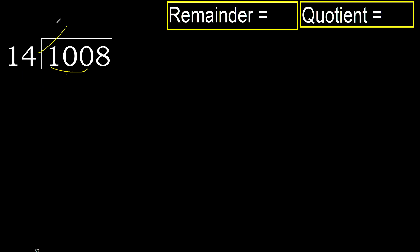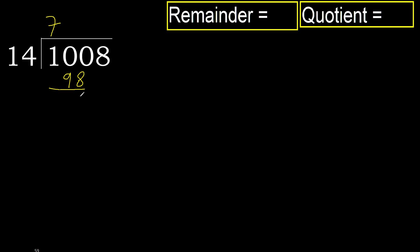Wait — 100. 14 multiplied by which number is nearest to 100 but not greater? 14 multiplied by 8 is 112, which is greater. Multiply by 7: 98 is not greater. 100 minus 98 is 2.